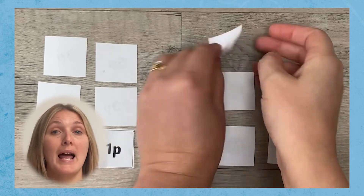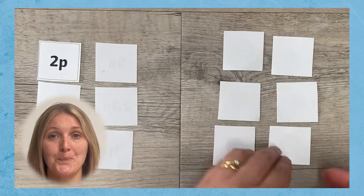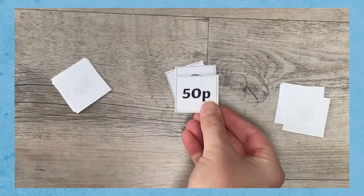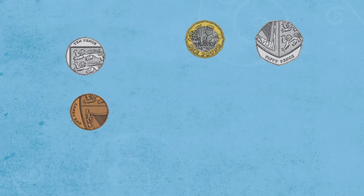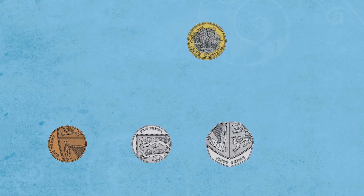If you do have access to a printer, there are lots of games that you can play with this resource too. You could play matching pairs or snap, or you could give children just some of the coins and see if they can order them from the smallest to the largest value.